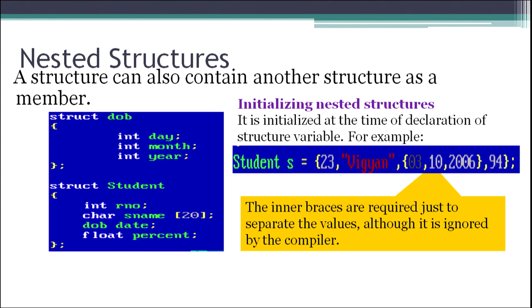It is also possible to have a structure within a structure — this is called a nested structure. For example, in the structure student we had roll number, name, and percentage. Now we want to include date of birth as well. Date itself can be treated as a structure with three elements: day, month, and year. We first create structure dob indicating date of birth, and then in the structure student we declare a structure variable date. The syntax is the same — structure name followed by the variable name: dob date;